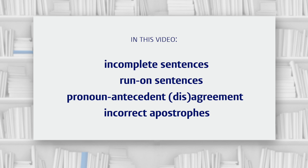Hi there. In this video, we're going to look at some problems and errors that often come up in student writing. The errors we're talking about are errors in building proper sentences and using words and punctuation correctly. Here are the errors we're going to discuss: incomplete sentences, run-on sentences, pronoun antecedent agreement or disagreement, and incorrect apostrophes. The goal of this video is to introduce these common problems so that when you get feedback on your writing, you can understand better what that feedback means and what you need to fix. With practice, you'll also be able to spot and fix these errors in your own work or avoid them altogether.